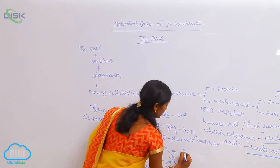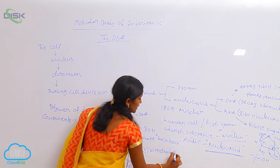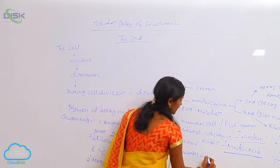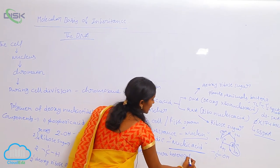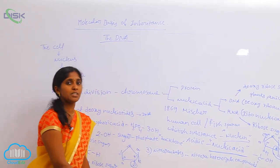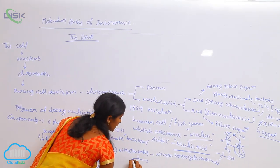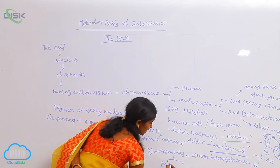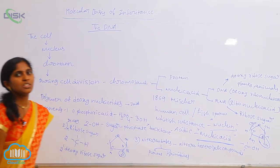Another key component of DNA is nitrogen bases. Nitrogen bases are nitrogen-containing heterocyclic compounds. Two types of nitrogen bases are present in DNA according to their structure: purines and pyrimidines.